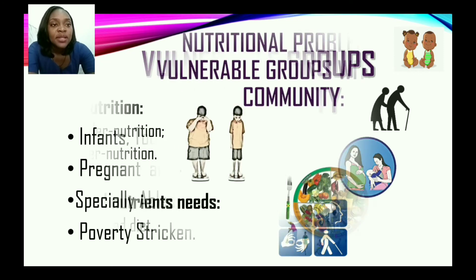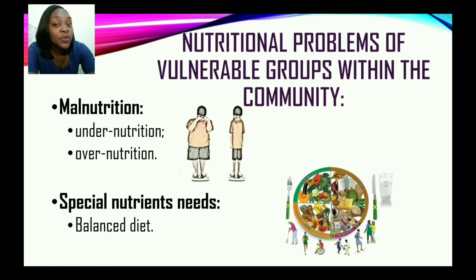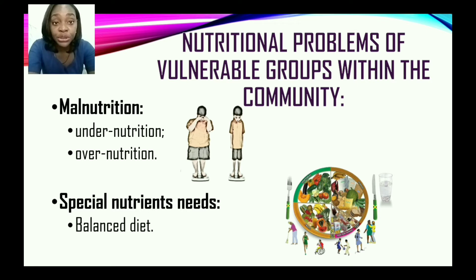Now let us look at the nutritional problems of vulnerable groups. There are two types of malnutrition. People tend to think malnutrition only refers to persons who are underweight, but in fact the two types are undernutrition and overnutrition. These persons will also need special nutritional needs and a balanced diet.